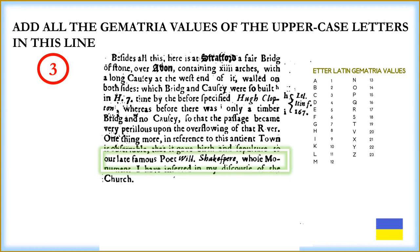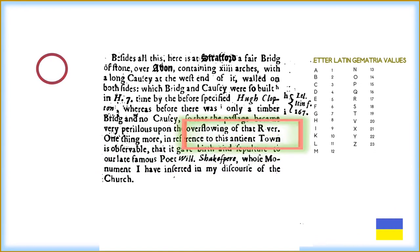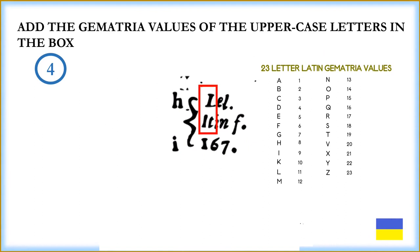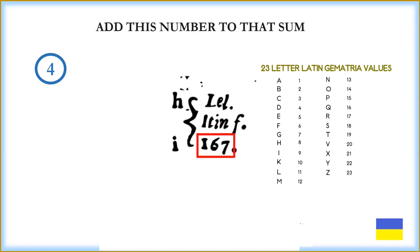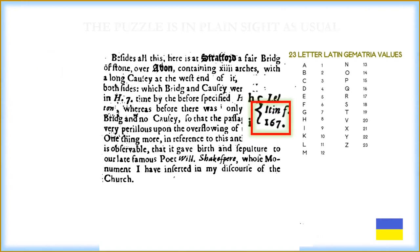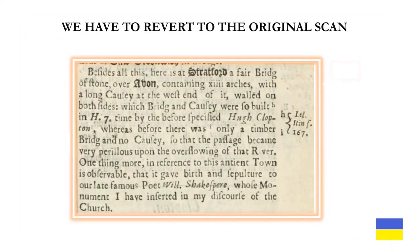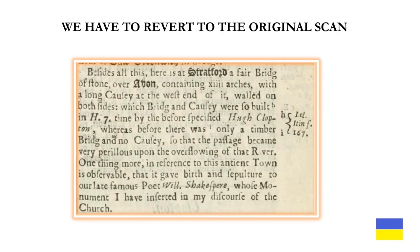For our fourth puzzle, we add the gematria values of the uppercase letters in the box, the uppercase letters L and I, and we add this number to that sum. The puzzle is in plain sight, as usual. Here we go — we have to revert to the original scan to see some of the things not very visible in the bit trace.